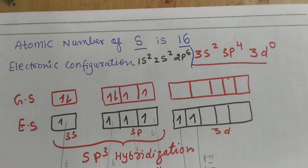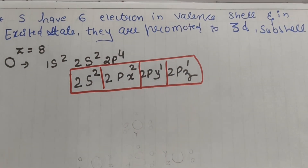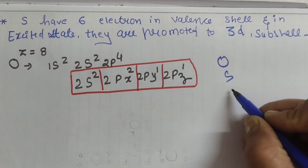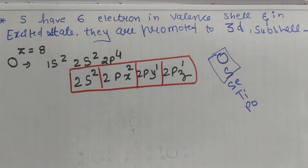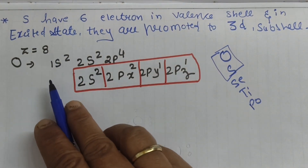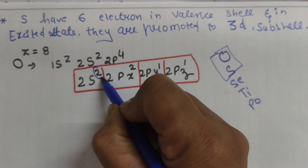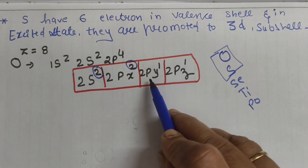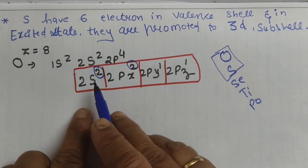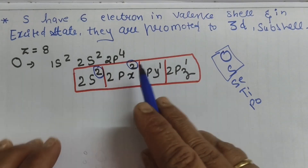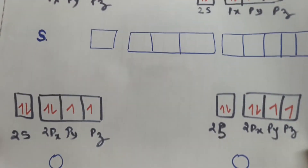Sulfur's outermost configuration is 3s² 3p⁴ 3d⁰. Oxygen belongs to the same family (Group 16), so it also has 6 valence electrons. Oxygen's configuration is 1s² 2s² 2p⁴, written as 2s² 2px² 2py¹ 2pz¹. There are two lone pairs and two unpaired electrons in py and pz, and only these two unpaired electrons participate in bonding.